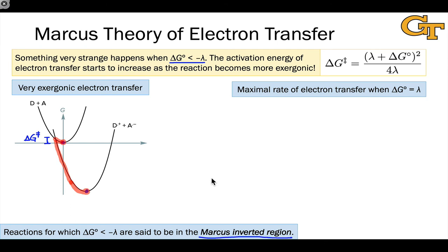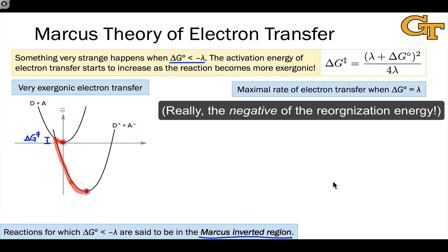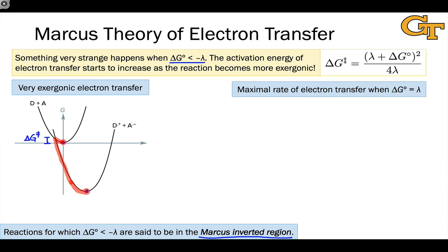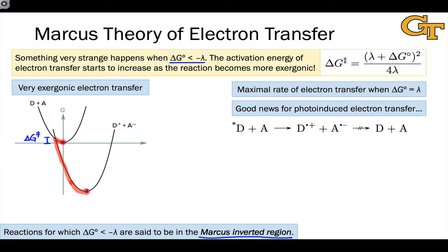The two big conclusions here are that, number one, the activation energy is lowest, it's at a minimum, and the rate is at a maximum when thermodynamic free energy difference is equal to the reorganization energy, the solvent reorganization energy. The second big conclusion is the Marcus inverted region, that eventually we will reach a point where the barrier starts to go up as we get more and more exothermic or exergonic in reaction. This is actually great news for photo-induced electron transfer.